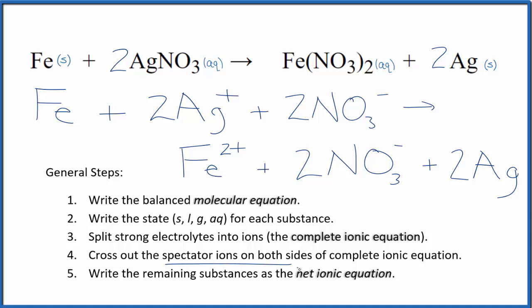Now we can cross out the spectator ions. They're on both sides. In the reactants, I can see two nitrate ions right here, and again in the products. These are spectator ions. We can cross these out.